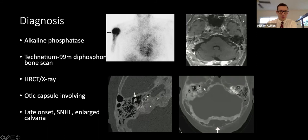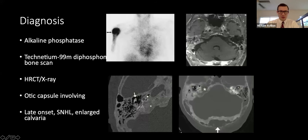As the disease progresses, sclerotic bony changes appear with thinning of the otic capsule, eventually progressing to the classic 'cotton wool' appearance of the bone. Notably, the ossicles are unaffected. Distinguishing features of Paget's disease compared to otosclerosis include later age of onset, greater incidence of sensorineural hearing loss, enlarged calvarium, elevated alkaline phosphatase, and characteristic CT findings.